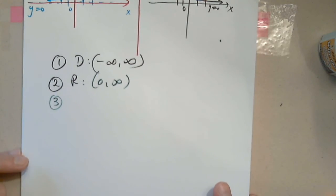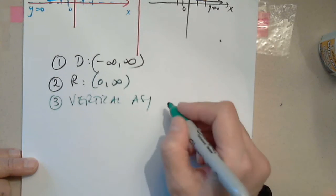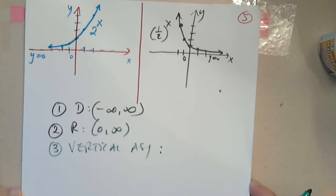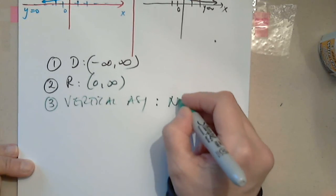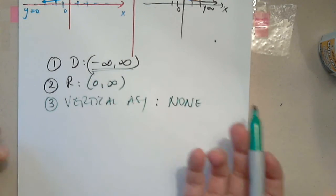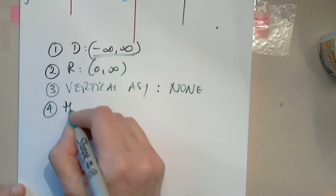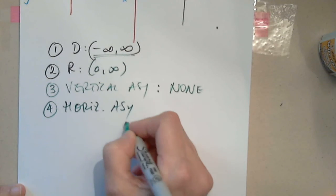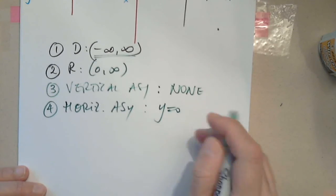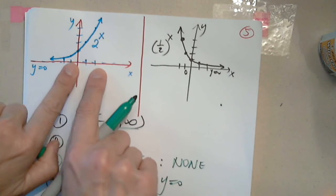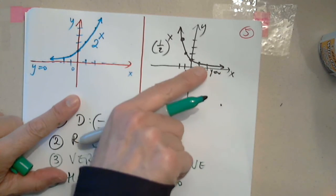Number three: vertical asymptote? No — how can it have a vertical asymptote if it's defined everywhere? Number four: horizontal asymptote? Yes, y = 0. But we have to be careful: this one has the horizontal asymptote at negative infinity, and this one at positive infinity.